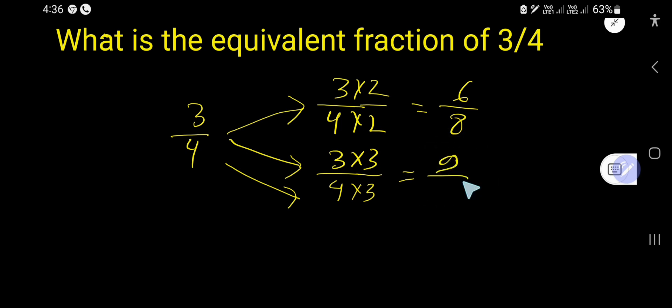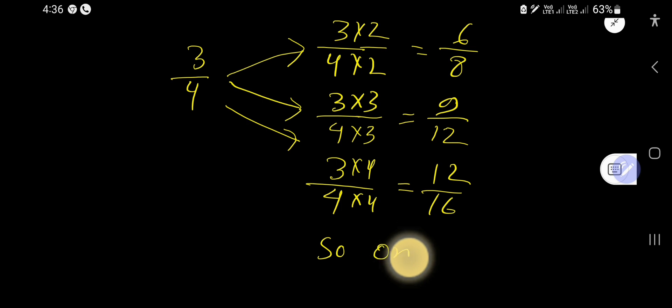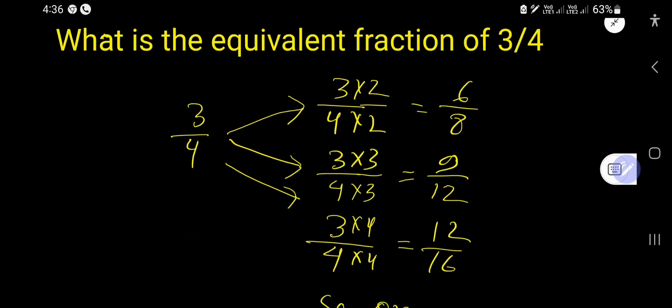So you're getting 9/12. 9/12 is also the equivalent fraction of 3/4. Okay, let me take another equivalent fraction of 3/4. Let us multiply by 4, so 12/16. And this process will continue, right? So there are lots of equivalent fractions for 3/4.